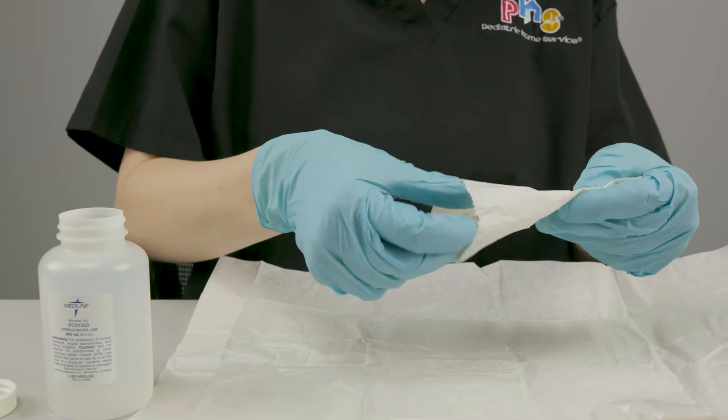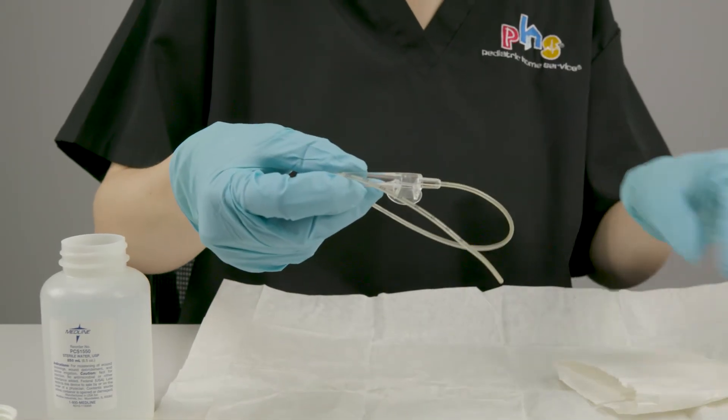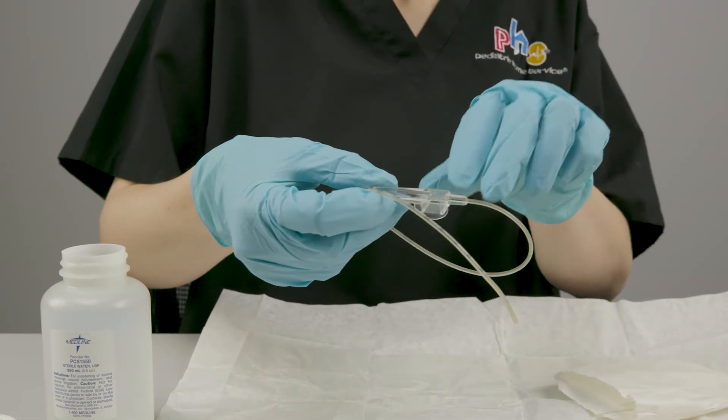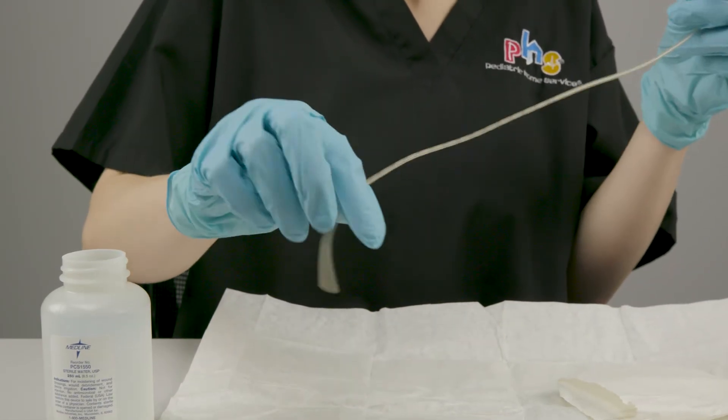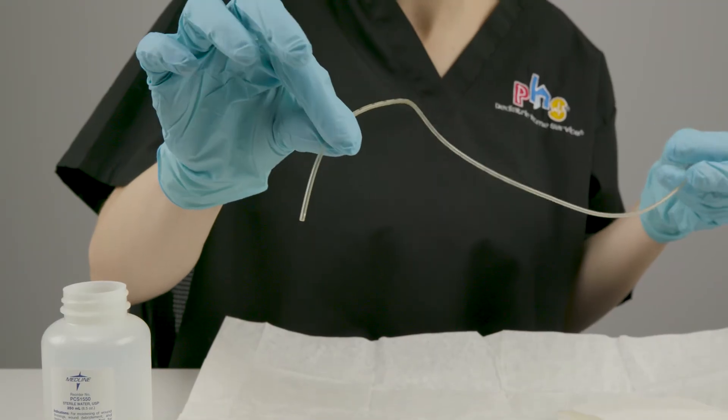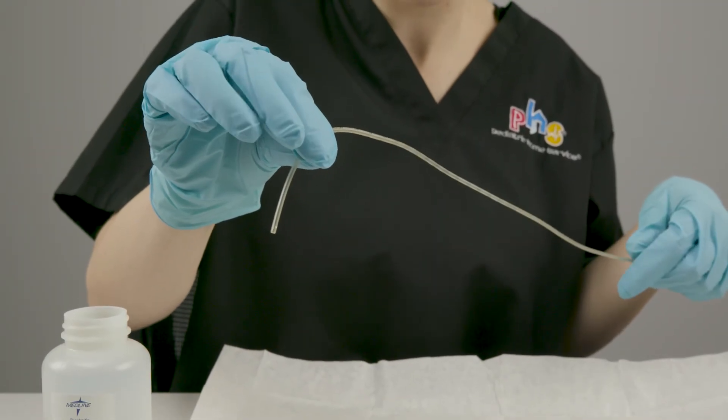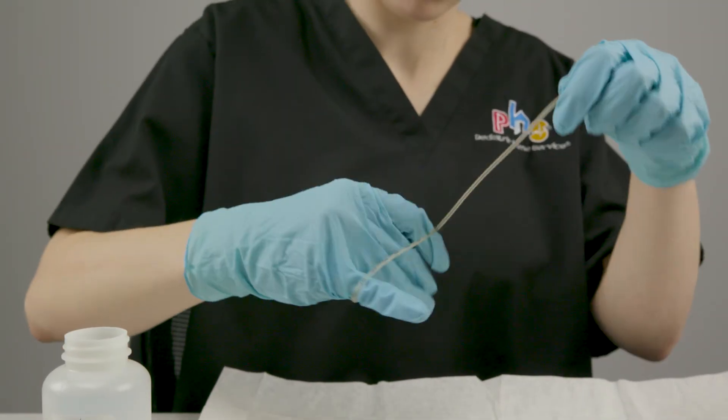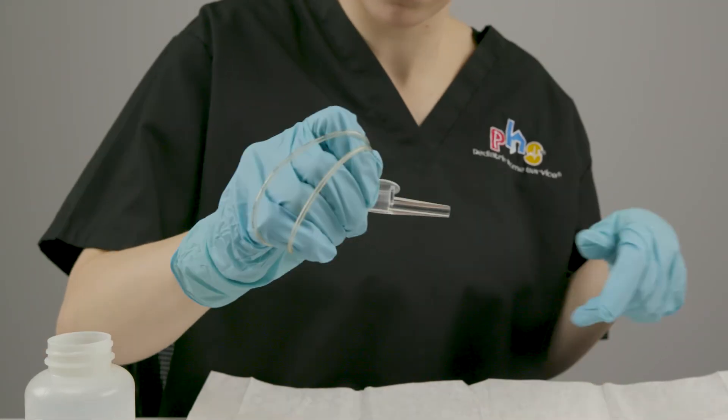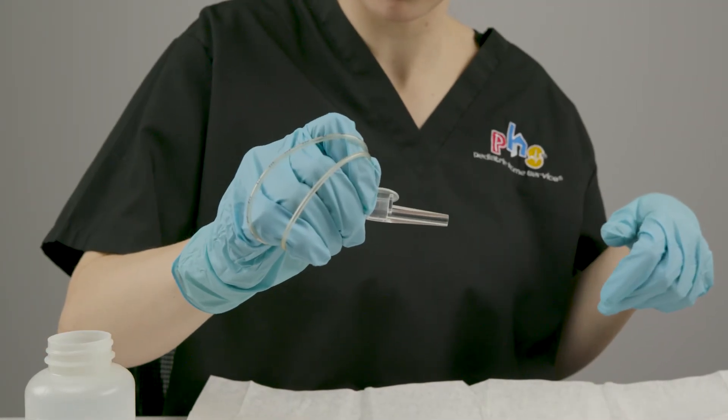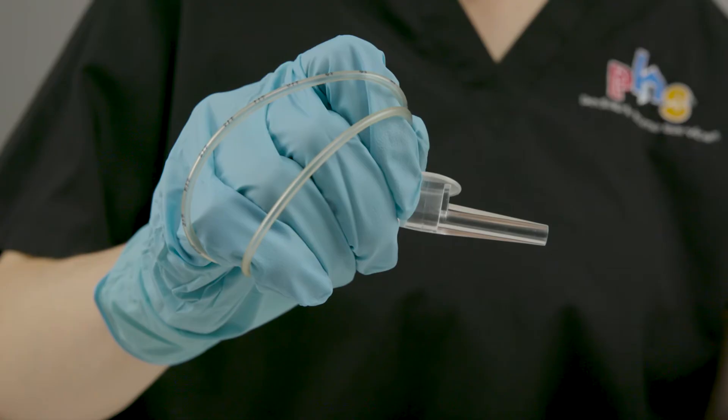Take the catheter out of the paper pouch while continuing to keep both hands sterile. Hold the tip of the suction catheter between the thumb and pointer finger of your dominant hand. Then, wrap the suction catheter around your dominant hand. Hold the thumb port end of the suction catheter in your dominant hand.